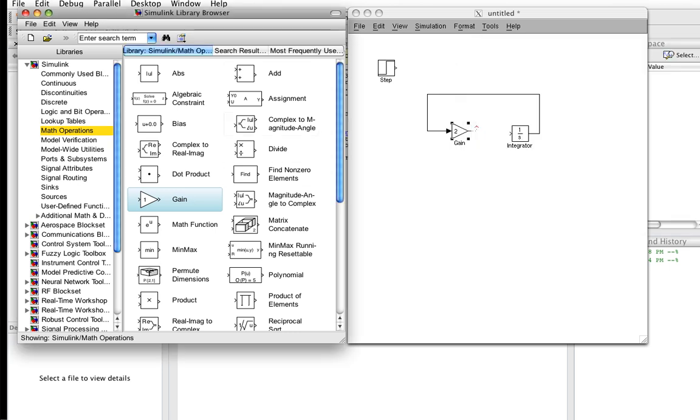Now we also need to add the input to this. So we'll get an adder from the math operations. And now we can wire this into the integrator. And we can wire the output of the gain to the adder.